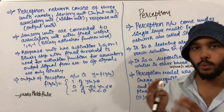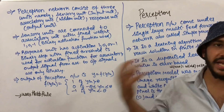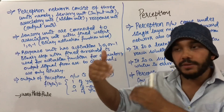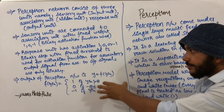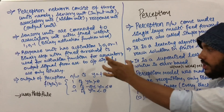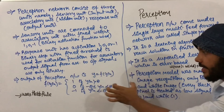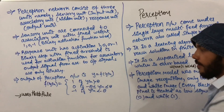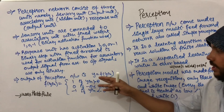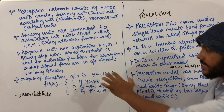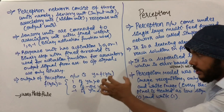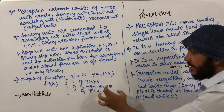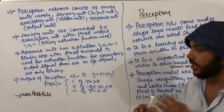From the associatory unit to the response unit, the activation function has three values: one, zero, and minus one. These are compared with a threshold value theta. The output y = f(yn) is defined as: one if yn is greater than theta, zero if yn is between minus theta and theta, and minus one if yn is less than minus theta.